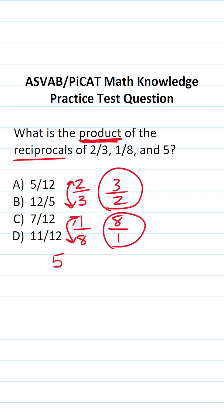Now let's find the reciprocal of five. First, I'm going to write it as a fraction by placing it over one. Then I'm going to exchange my numerator and denominator. So its reciprocal is one-fifth.